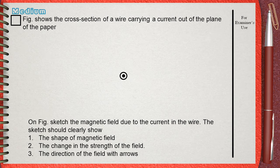Your sketch should clearly show number 1, the shape of the magnetic field, number 2, the change in the strength of the field, number 3, the direction of the field with arrows.